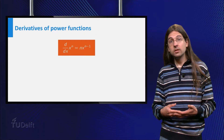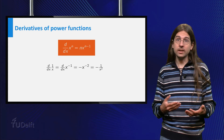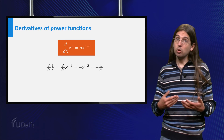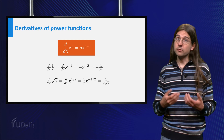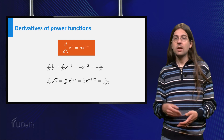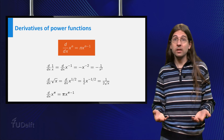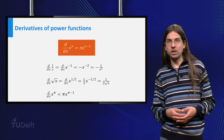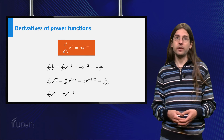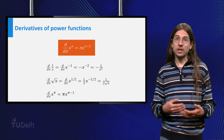It should be noted that the formula also holds for negative n. For example, the derivative of 1 over x equals minus 1 times x to the power minus 2, which is minus 1 over x squared. It holds for fractional n — the derivative of square root of x equals 1 half times x to the power minus 1 half. And even any real number n; for example, the derivative of x to the power pi equals pi times x to the power pi minus 1. However, proving this for all these other values of n is rather complicated and we will do this later with a neat trick using the derivative of the exponential function.